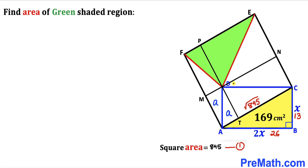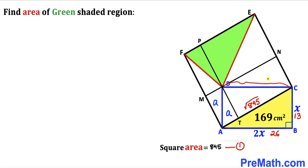Focusing on the next rectangle, diagonal CD divides its area into two equal parts. If the area of one triangle is lowercase b, the area of the other identical triangle is also lowercase b.